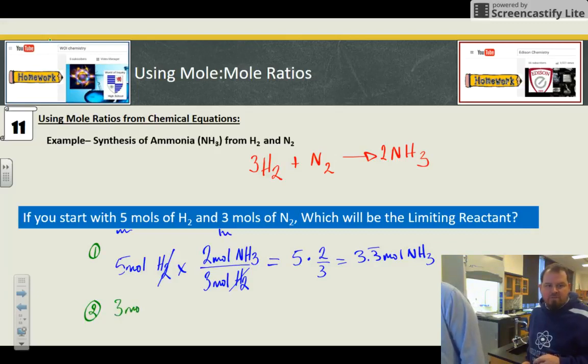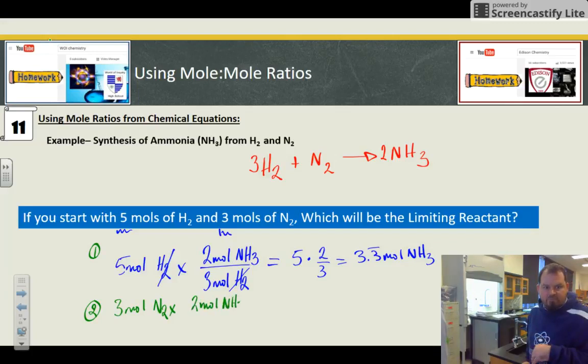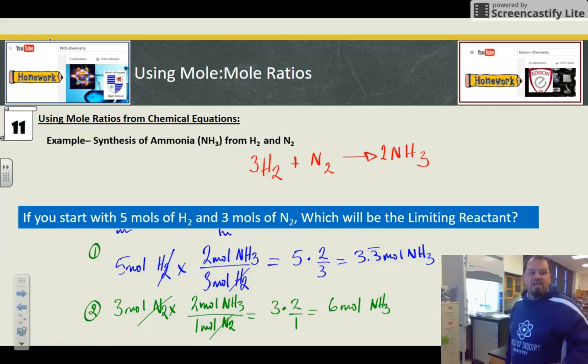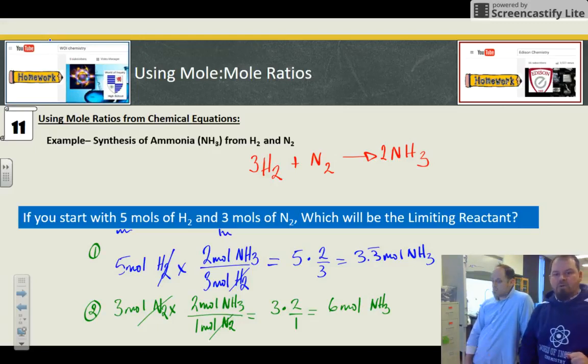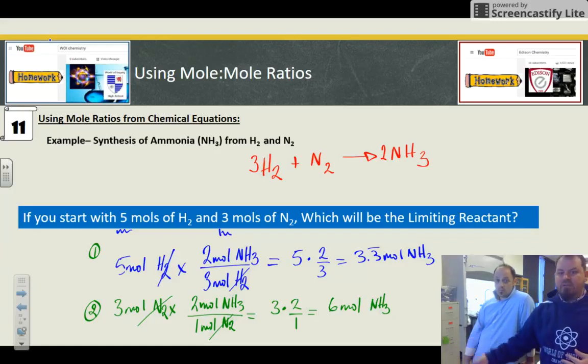Now I'm going to do for the three moles of N2. So three moles of N2. Now I need moles of N2 as the denominator of my conversion factor. The same way we did the unit or dimensional analysis with gram formula mass. So common product, two moles of NH3. But this time it's only going to be one mole of N2 because that's what is in my balanced chemical equation. We use the ratio that we just talked about at the beginning of the lecture. So now it's six moles of NH3.